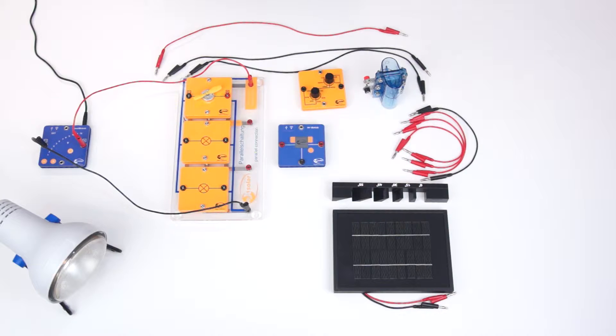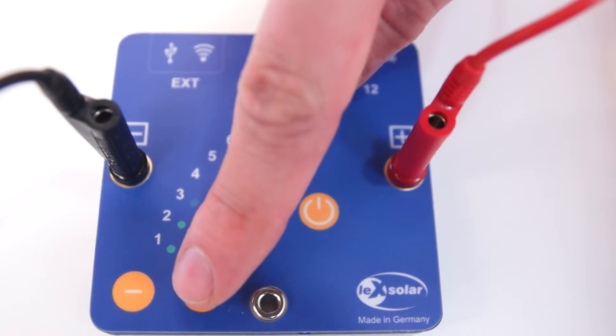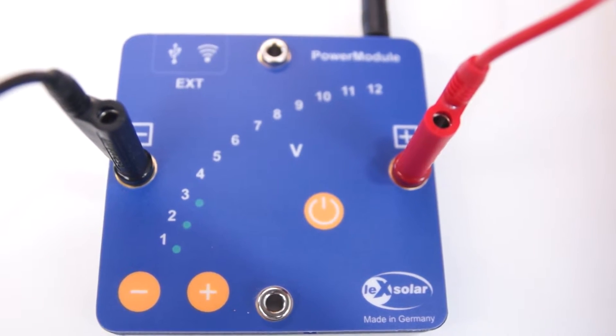For our experiment we define the nominal voltage to 3 volts with the same percentage deviation. Since we want to have our building at an ideal voltage we set a voltage of 3 volts on the power module.